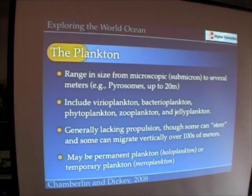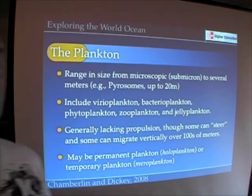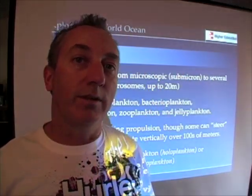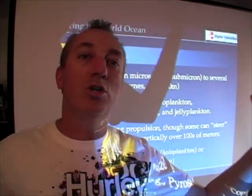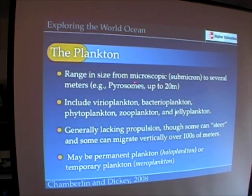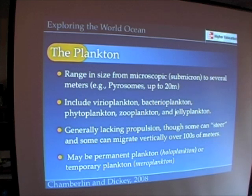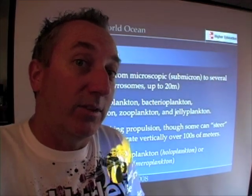Plankton are roughly translated as animals and plants that drift — microorganisms that drift, all the way up to large organisms that drift. They range in size from just a few microns to several meters; one of the largest plankton is 20 meters long, almost 60 feet. They are divided into vireoplankton (viral plankton), bacterioplankton (bacteria), phytoplankton (photosynthetic microbial plankton), zooplankton (animal plankton), and jelly plankton, which are the gelatinous soft forms.